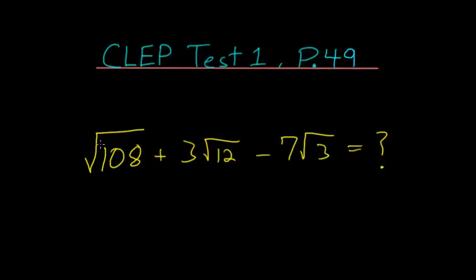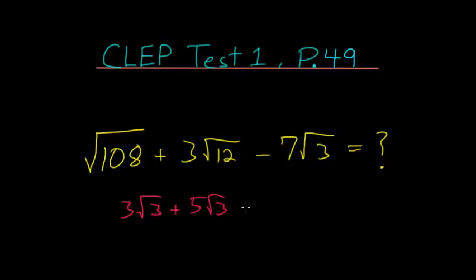In this problem, we need to evaluate this expression involving square roots. The only way we can add or subtract square roots is if we're adding or subtracting multiples of the same square root. For instance, if we had 3 root 3 plus 5 root 3, we can just add the coefficients to get 8 square roots of 3.